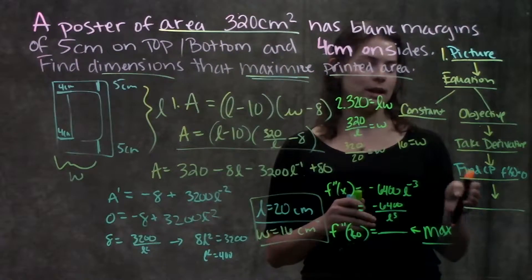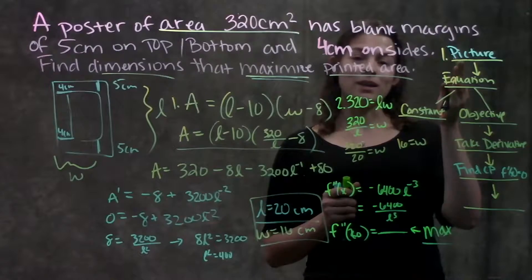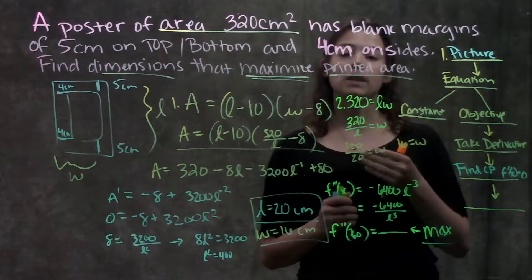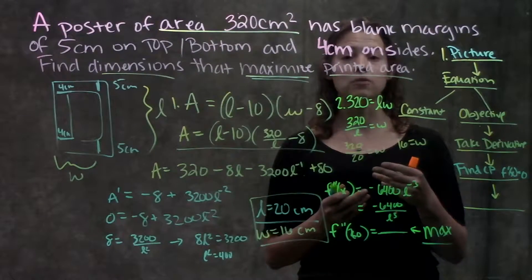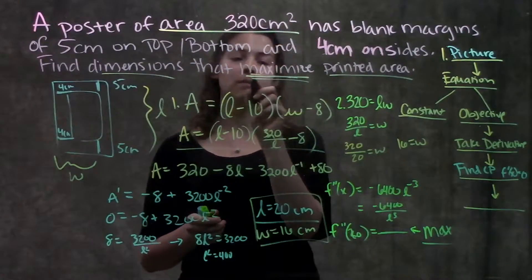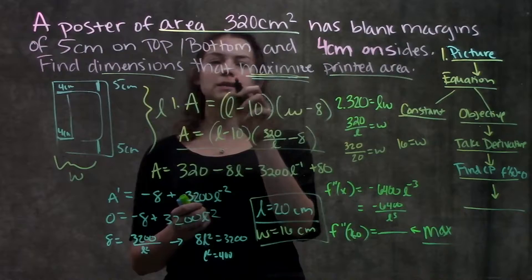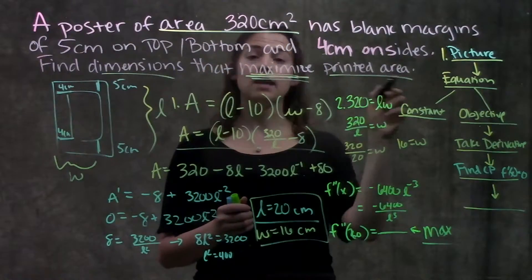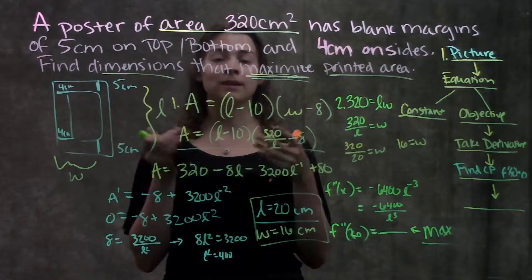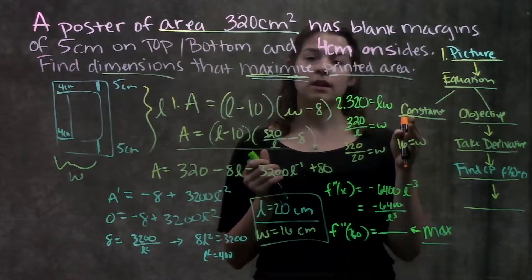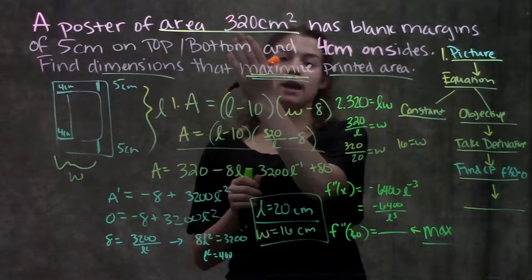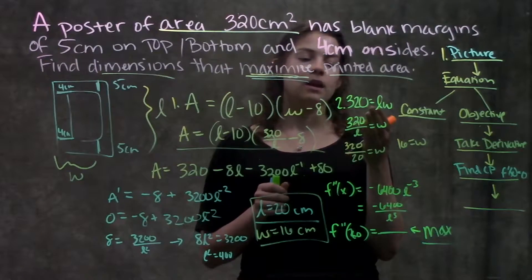And to just go through this flowchart and finish filling it out, step one was we drew a picture of the situation and labeled everything that they told us. Step two, we came up with an equation. We actually had to come up with two equations. One equation was the one that we had to optimize, the one that they're asking for the maximum or minimum value of. In this case, they're asking us to maximize the area, so we had an area equation. But we weren't able to take the derivative yet, because there are too many variables. So we had to make a constant equation of a set relationship between our variables. We did that using the area that they gave us, and with this equation we solved for one of our variables, plugged it into our objective function, and then rewrote it in terms of just those two variables.